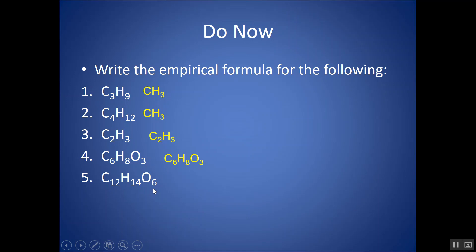For C12H14O6: these numbers could all divide by 2 — 2 is the greatest common denominator. 12÷2=6, 14÷2=7, 6÷2=3. So the empirical formula is the simplest whole number ratio between the atoms. Sometimes the molecular formula might be the same as the empirical formula; the molecular formula is how many atoms are actually in that compound.